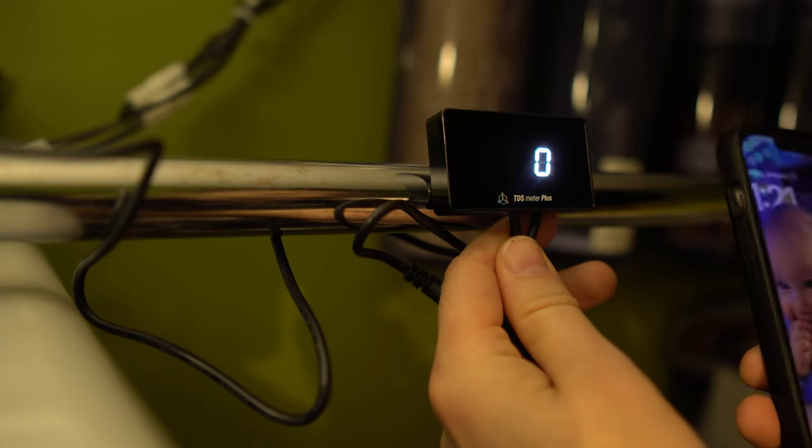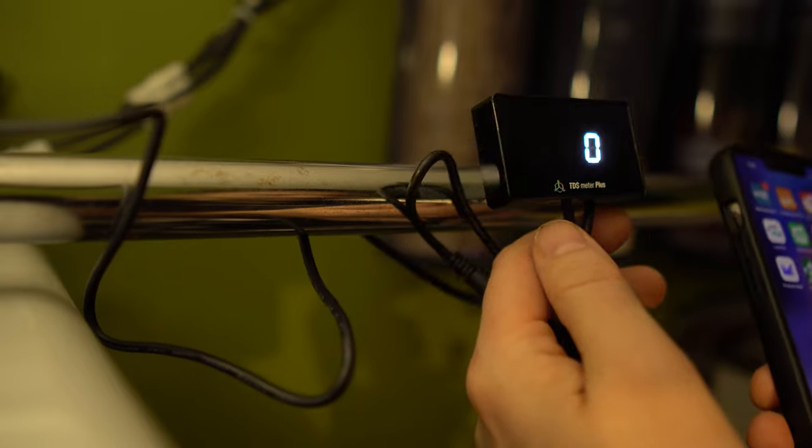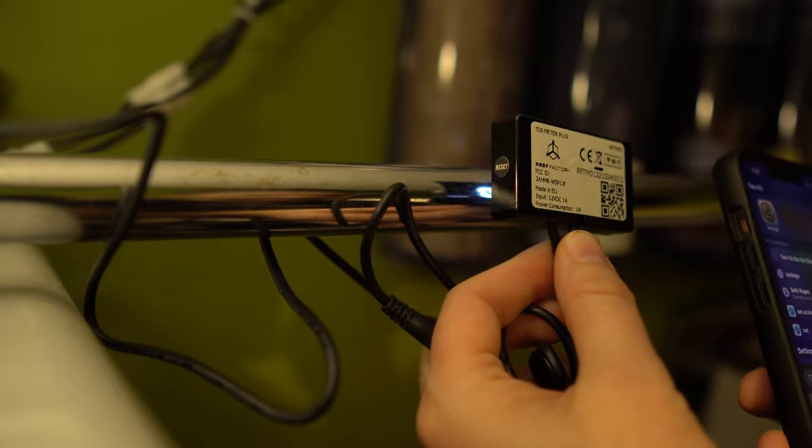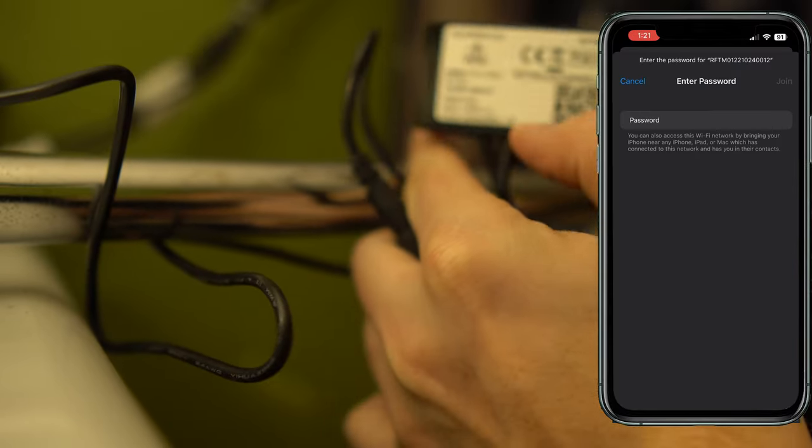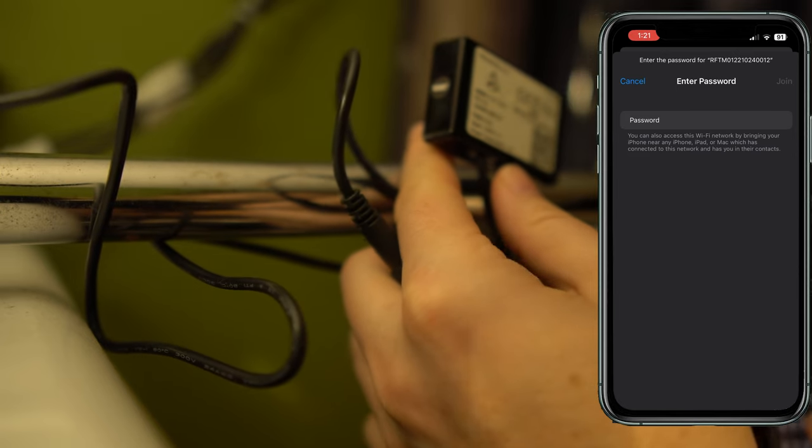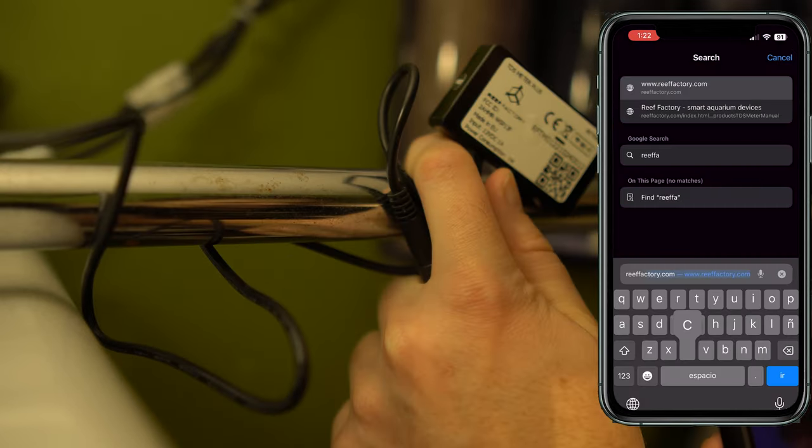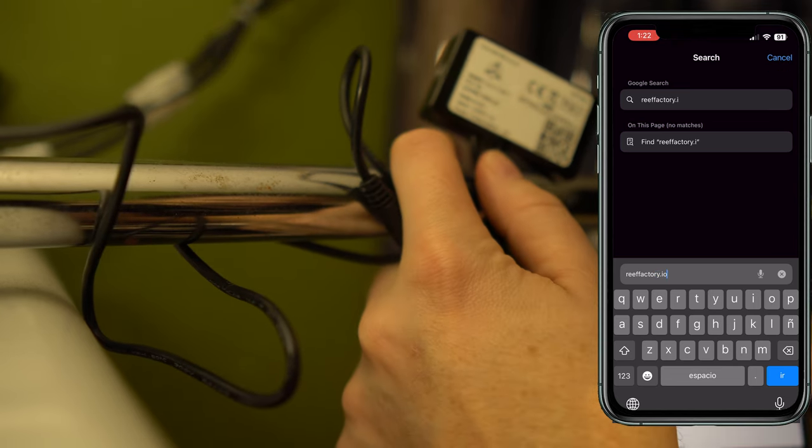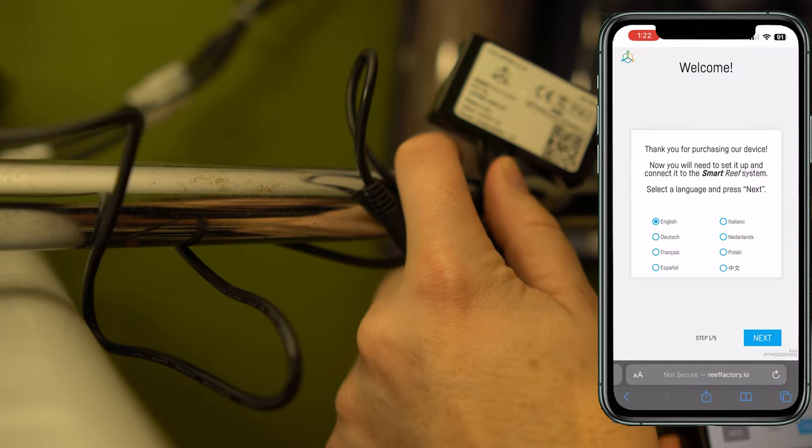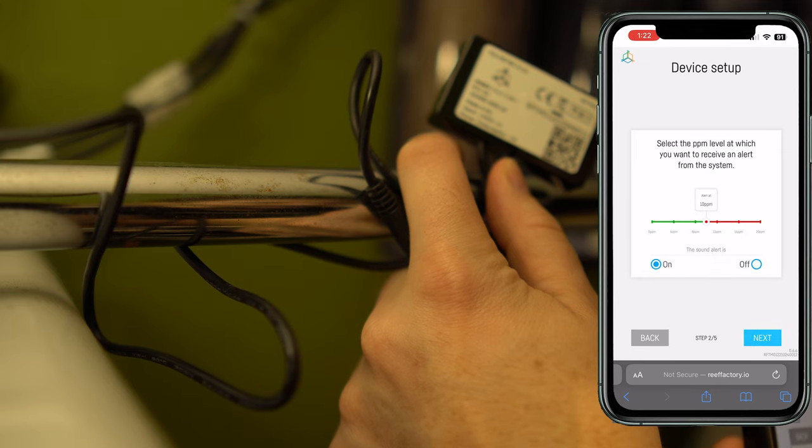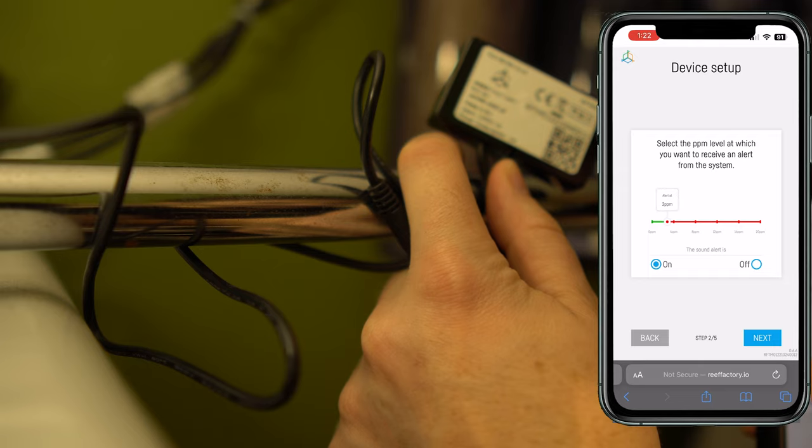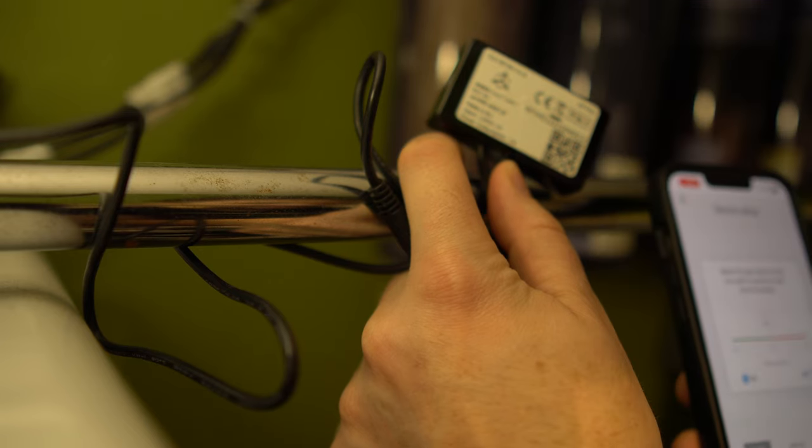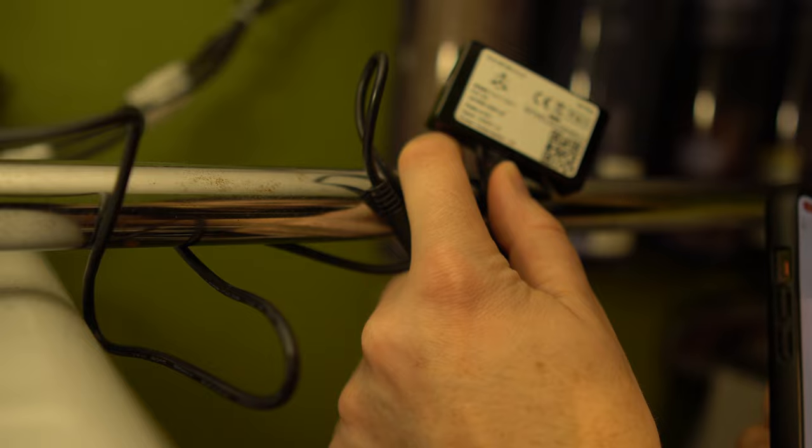Alright, so we got this plugged in for the first time. Now we should be able to be putting out a Wi-Fi network we can join. Alright, so we have that Wi-Fi network, the password is ReefFactory. I believe we go to ReefFactory.io in the browser and we should be able to set it up from here. So English, level at which you want to receive an alert. So I want to receive an alert at 1 ppm. Join it to my Wi-Fi.